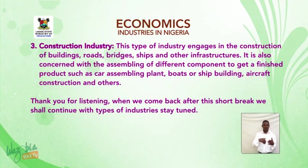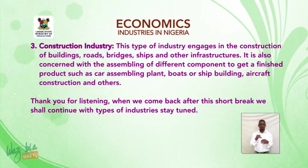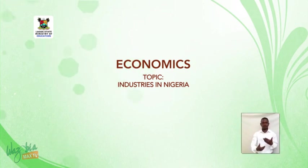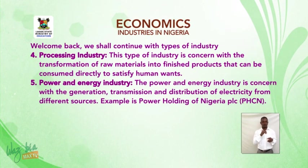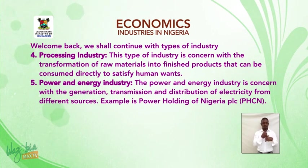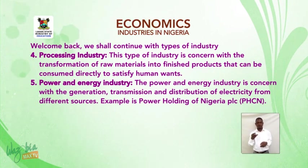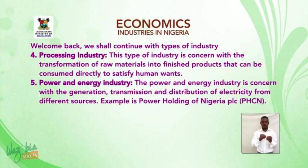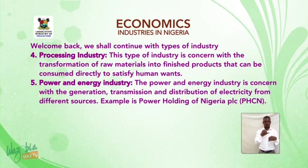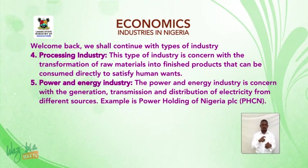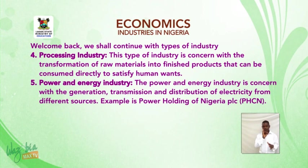Thank you for listening. When we come back after this short break, we shall continue with the types of industry. Stay tuned. Welcome back. Number four: Processing industry. This type of industry is concerned with the transformation of raw materials into finished products that can be consumed directly to satisfy human wants. Number five: Power and energy industry. The power and energy industry is concerned with the generation, transmission, and distribution of electricity from different sources.